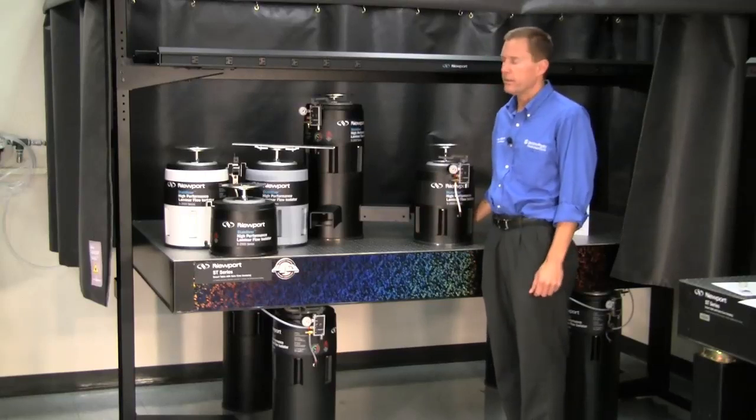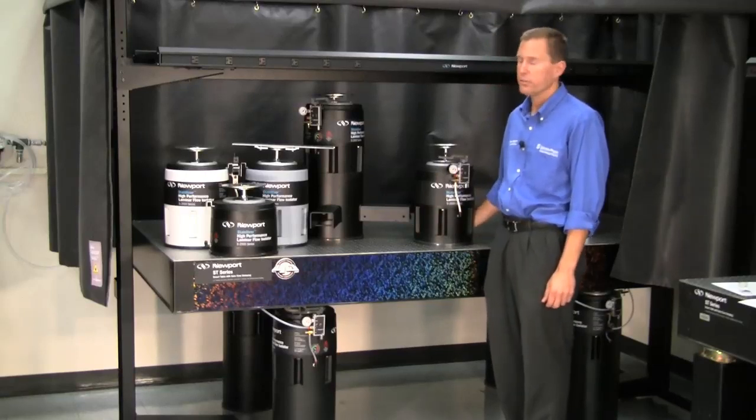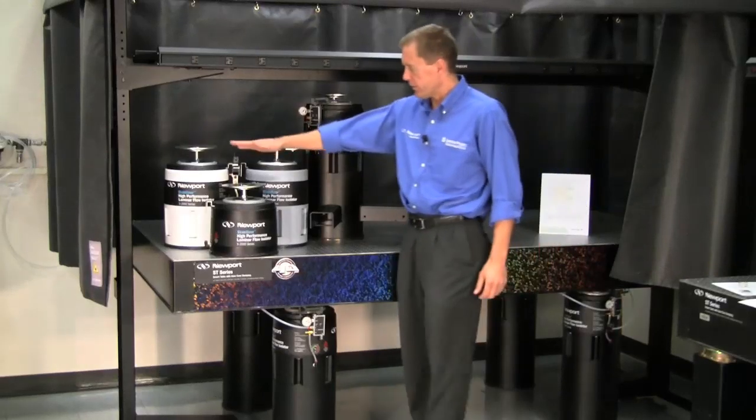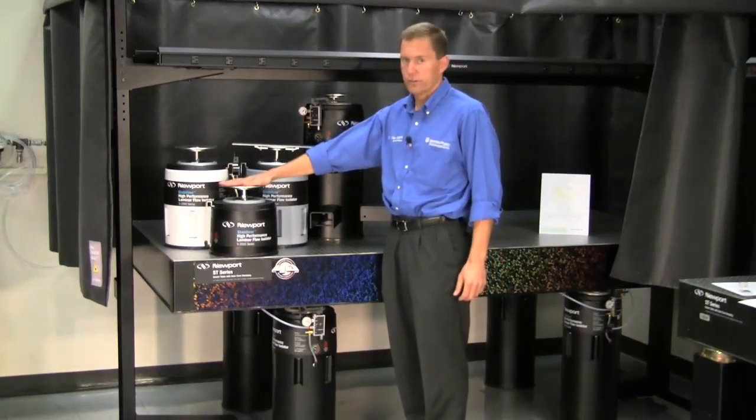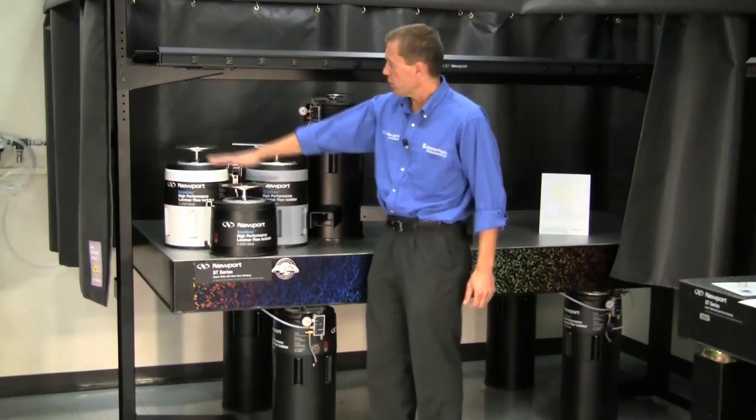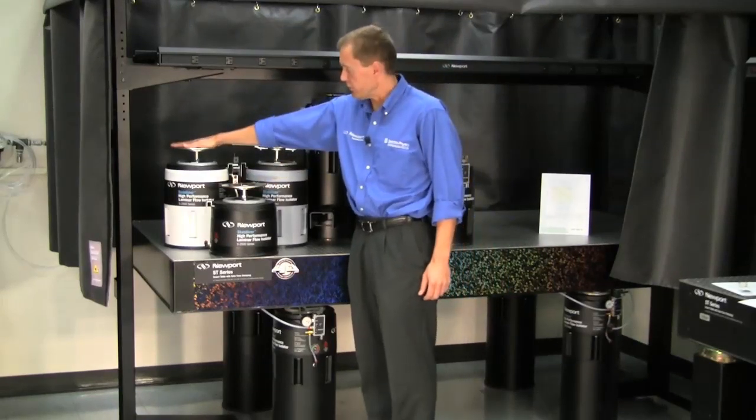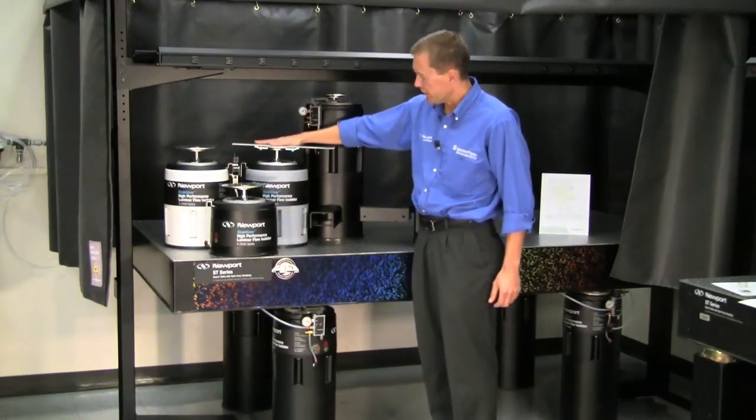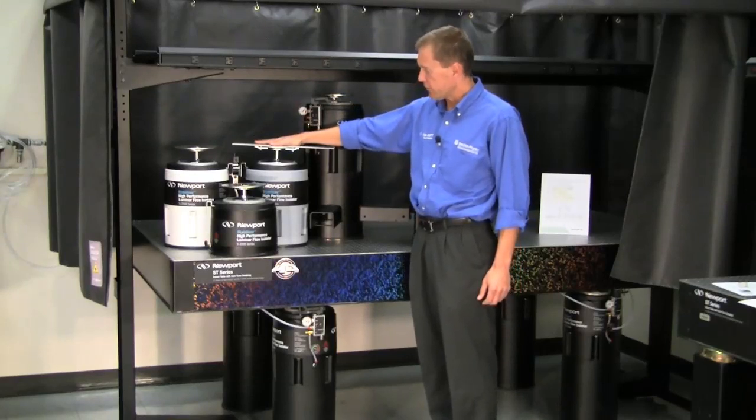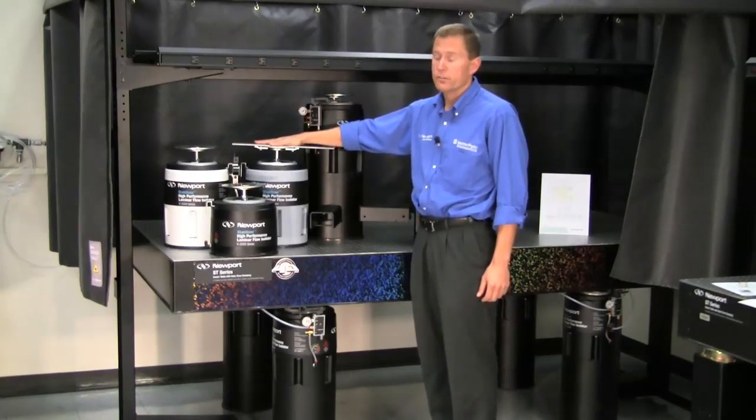As you can see on the table, there are four or five different versions of an isolator in different heights and different colors. First of all, we have our standard shorter height isolator, that's our standard S2000. We have this white isolator which is our standard S2000 but cleaned and painted for clean room applications, and we have this gray isolator here that's our S2000 stabilizer non-magnetic version.